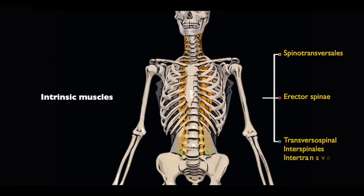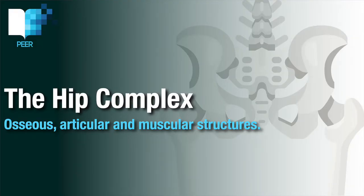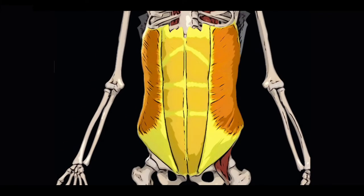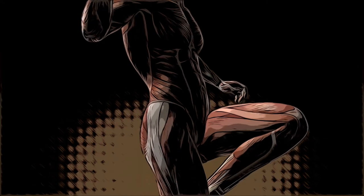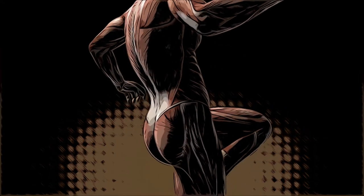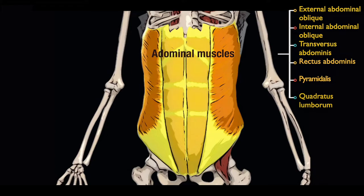The lumbar spine shares many of the same muscular structures with the thoracic and cervical vertebrae, including the intrinsic and extrinsic groups of back muscles. However, there are a number of muscular structures unique to this region, including muscles which flex the hip such as iliopsoas, and the muscles of the abdomen which contribute to the formation of the anterior, lateral, and posterior abdominal walls. These muscles flex, extend, laterally flex, and rotate the trunk, and provide support to abdominal structures. They include the external abdominal oblique, internal abdominal oblique, transversus abdominis, rectus abdominis, pyramidalis, and quadratus lumborum.